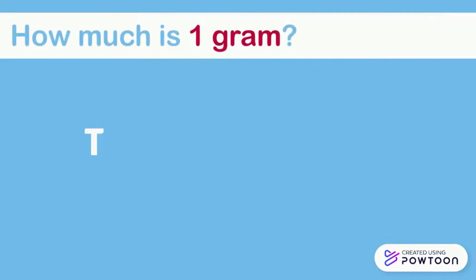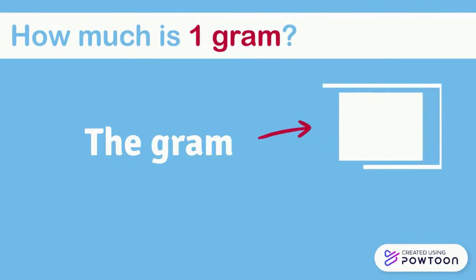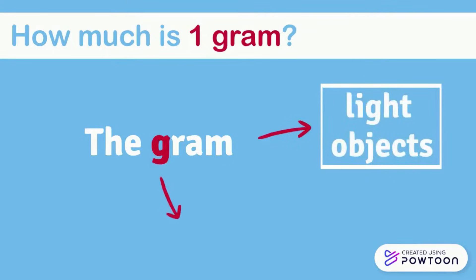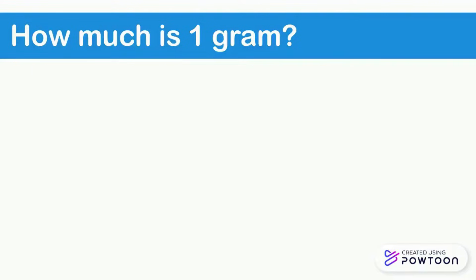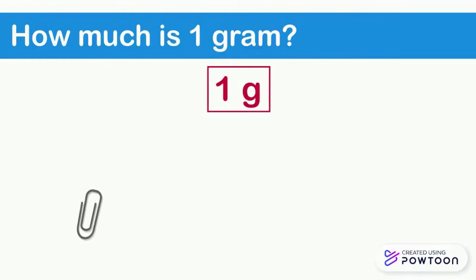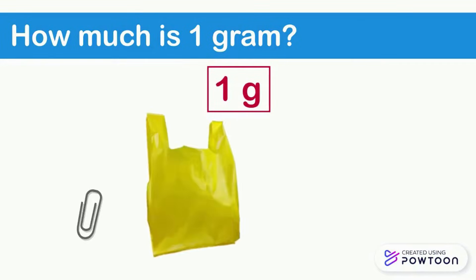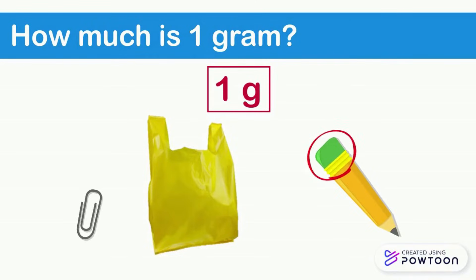Now, how much is one gram? The gram is still a unit of measurement, but we use the gram to weigh light items, and gram is written as g. When we say one gram, it's like the mass of a paper clip — a paper clip weighs one gram. A small plastic bag is also one gram. The eraser on the top of a pencil also weighs one gram.